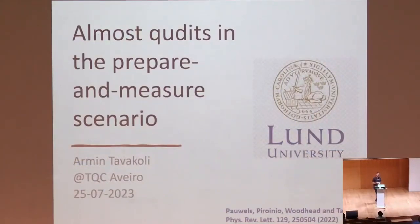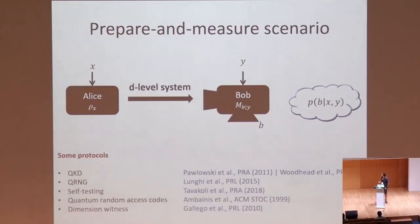To get there, I want to talk to you first about the prepare and measure scenario. This is a situation where you have a sender, which I call Alice, and a receiver that I call Bob. Alice can take some classical data, encode it in some quantum state, and send it over some channel. Bob can then select some measurement based on some classical data y, perform that on the state he received over the channel, and get some outcome b.